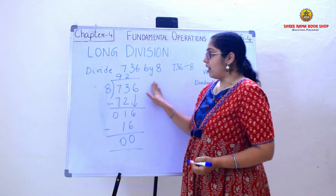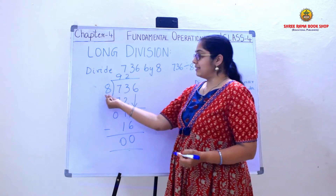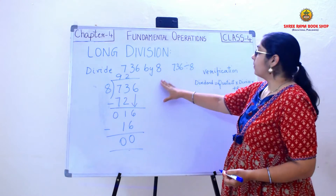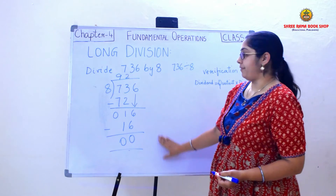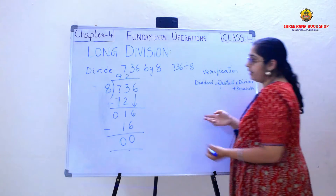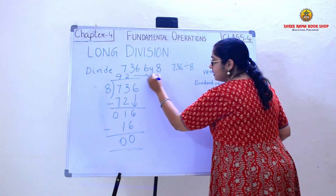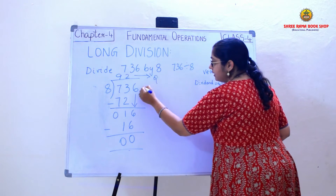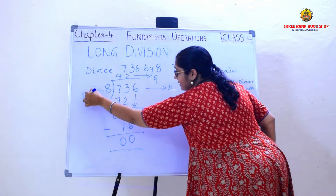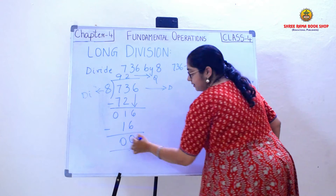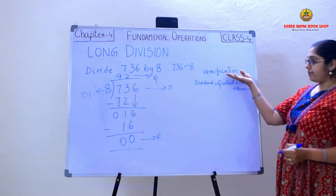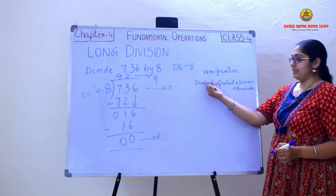So this is how you do long division using a single digit number. Now I need to verify whether my answer is correct or not. So children, this is the quotient, this is the dividend, this is the divisor, and this is the remainder. You already know that. So for verification I will be using this.